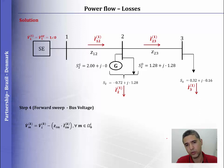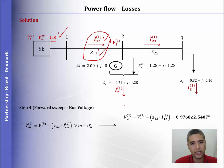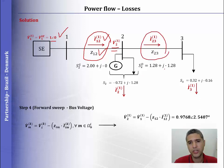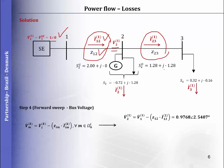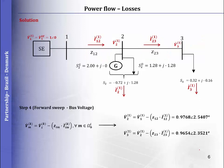Now we finish the backward sweep and start the forward sweep. We start at the substation, where the voltage is 1, and compute the voltage drop in the line by multiplying the current by the impedance. With the drop voltage in line 1-2, we compute the voltage at bus 2 for the first iteration. Then with the voltage at bus 2 and the drop voltage in line 2-3, we compute the voltage at bus 3.